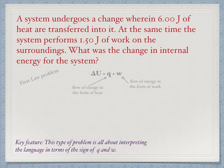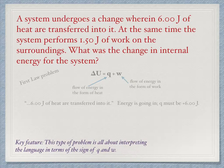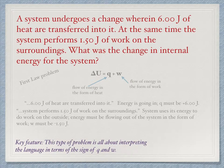Looking at this specific problem: it reads that six joules of heat are transferred into it — energy is going in, so Q must be plus 6.00 joules. It also reads that the system performs one and a half joules of work on the surroundings. The system uses its energy to do work on the outside, so energy flows out, and W must be minus 1.50 joules.